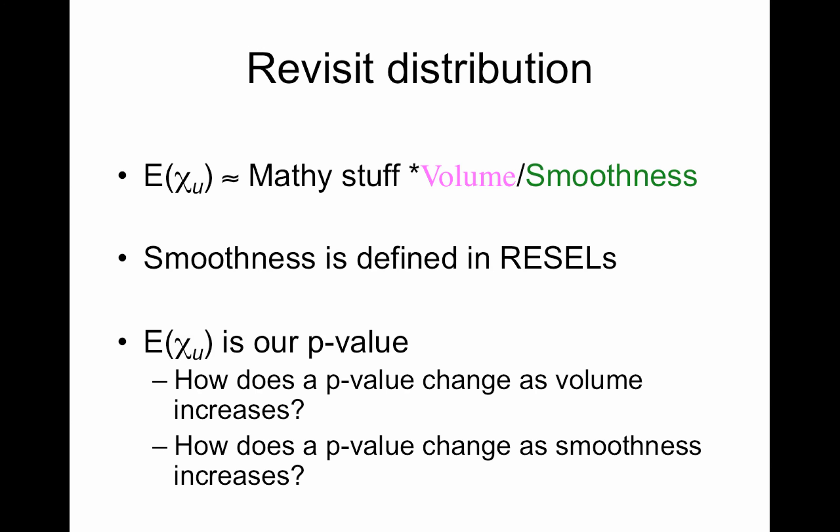How do we need to, if you think about correcting your p-values as kind of penalizing them, penalizing the voxel-wise p-value to adjust for the multiple comparison problem, if you only had two voxels, you wouldn't have to have a big penalty, right? You only have two voxels.